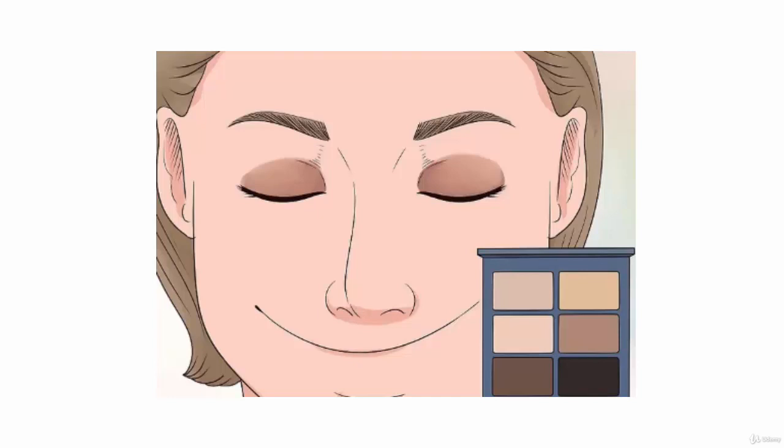Take a larger, fluffier makeup brush and dab it in a neutral shade of eyeshadow. Pick a shade that matches your natural skin tone. Brush your eyelid with the shade using gentle sideways motions. Continue from your eyelid onto your brow bone. Apply the shade until just under your eyebrow.